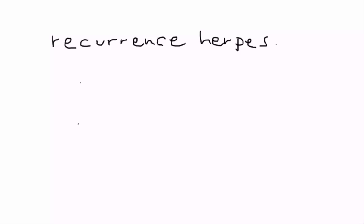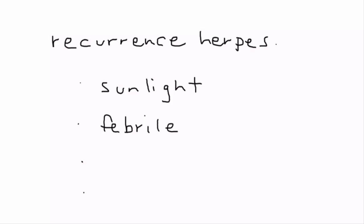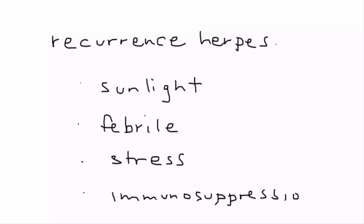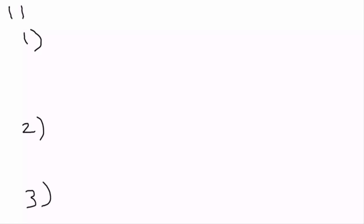Some of the triggers that cause reactivation include a lot of sunlight, a febrile illness, physical and emotional stress, and definitely immunosuppression — for example, someone who has HIV with a weakened immune system. That's why herpes keeps recurring: recurrent herpetic eruptions are precipitated by all of those things.